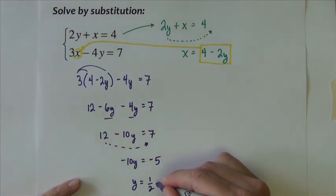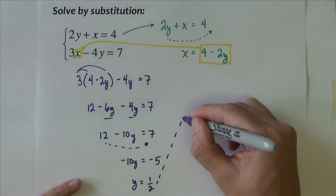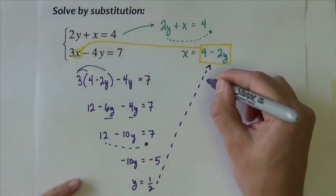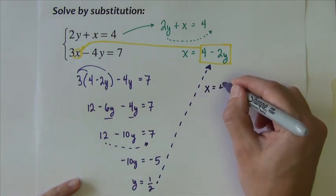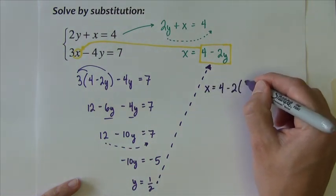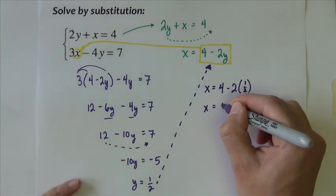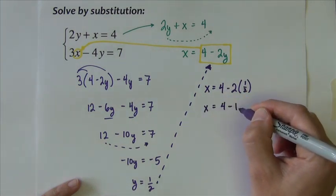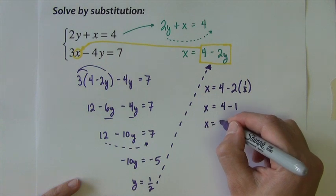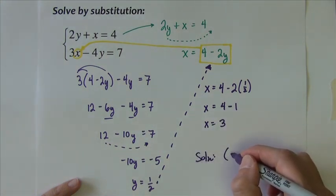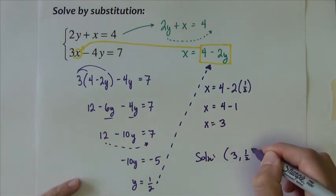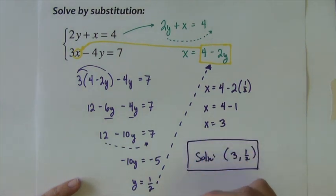Now take that y value here. So we get x equals 4 minus 2 times one half. So x equals 4 minus 1, so x equals 3. And our solution is the point 3 comma one half. You've got to get x and y to be considered a finished problem.